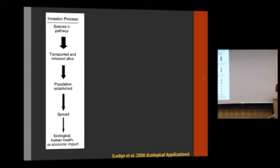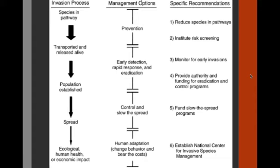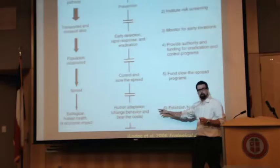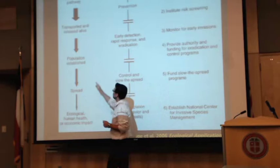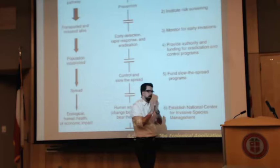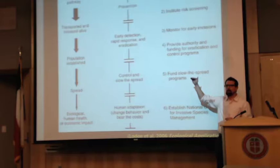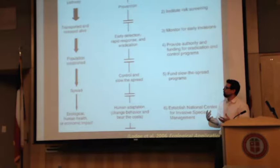It's useful to think about the invasion process this way because each one of those steps represents an opportunity to target specific management actions. We can prevent species from being taken up into a pathway. We can try to detect and prevent species from becoming established. And even when species are spreading and causing environmental impacts, as managers we can adapt human behavior and try to mitigate those costs. Each step in the invasion process is represented by a smaller and smaller arrow because we can think of each step as a filter the species has to pass through before it becomes a bad invasive.